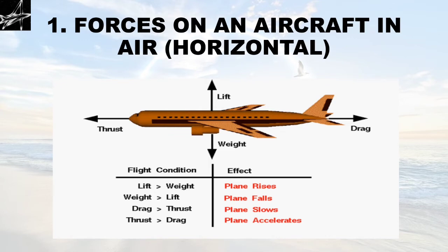First, forces on an aircraft in air. In the horizontal case all the forces are perpendicular in direction. There is another case in which the aircraft is tilted and some forces are not perpendicular to the aircraft body. The forces we can see are lift, weight, thrust and drag.